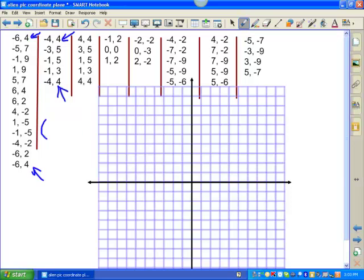Now we do have to understand that ordered pairs. We start with the x-coordinate, and then we go to the y. The x-coordinate is our left or right coordinate. We do that first. Our y-coordinate is up or down, and we do that second.